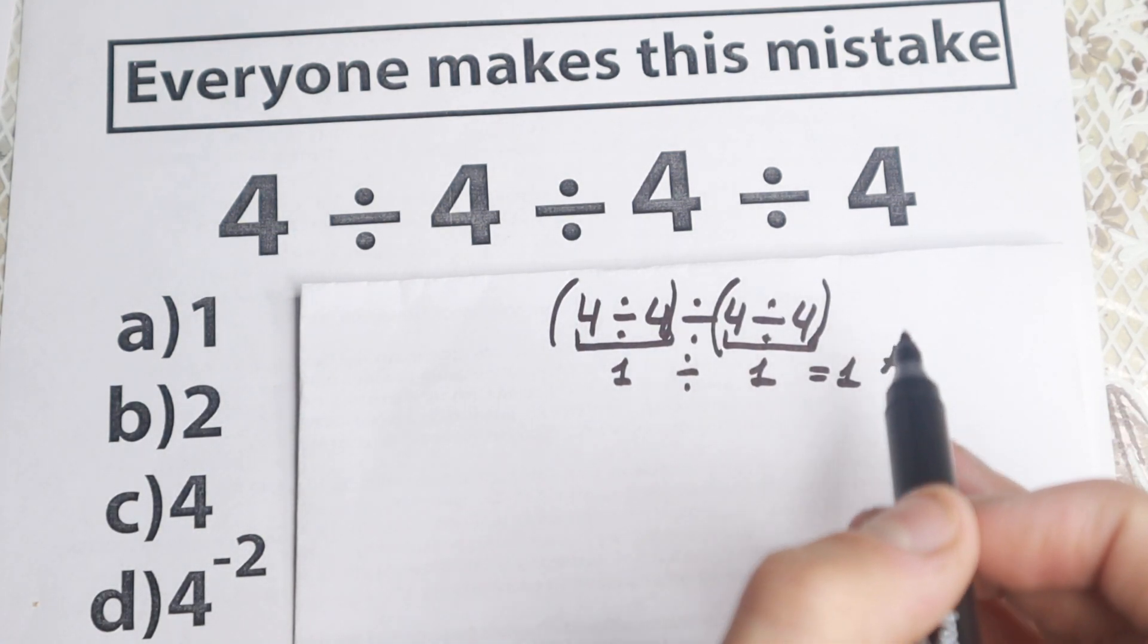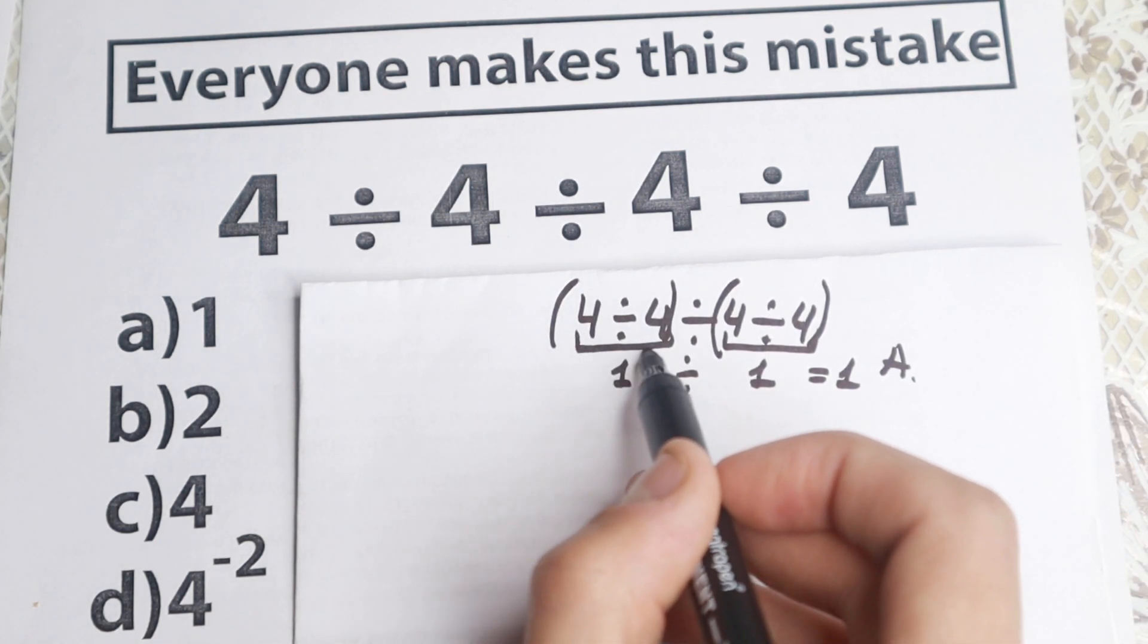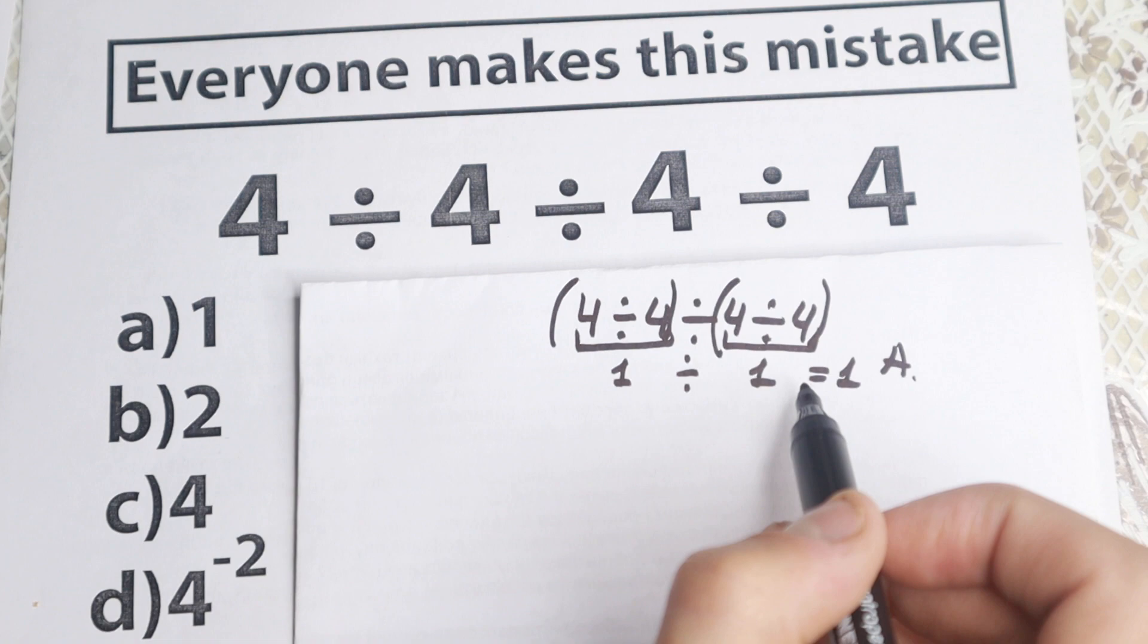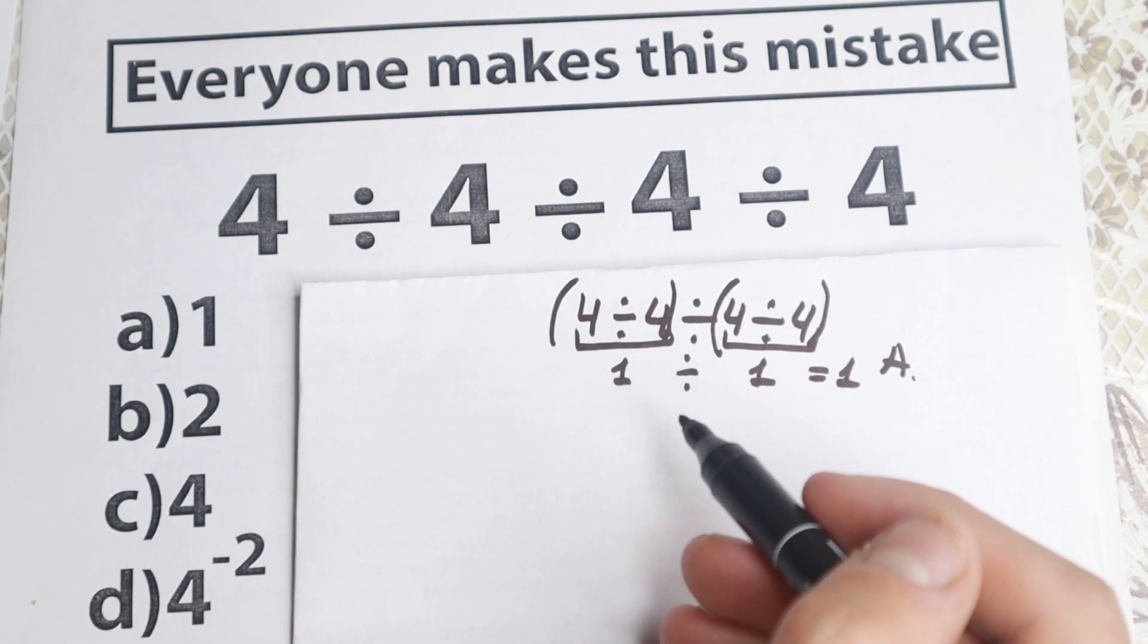So parentheses, this is the first main step in the order of operations. So we start with parentheses right here equal to 1 and right here. And then the answer is 1 when we have parentheses. But in our case we don't have parentheses.